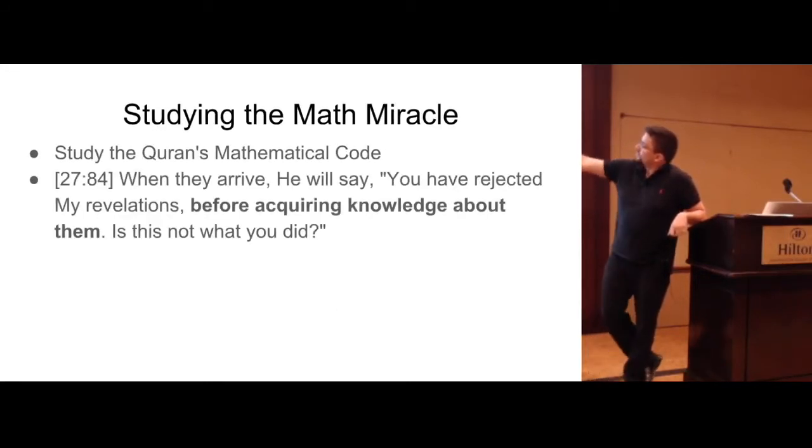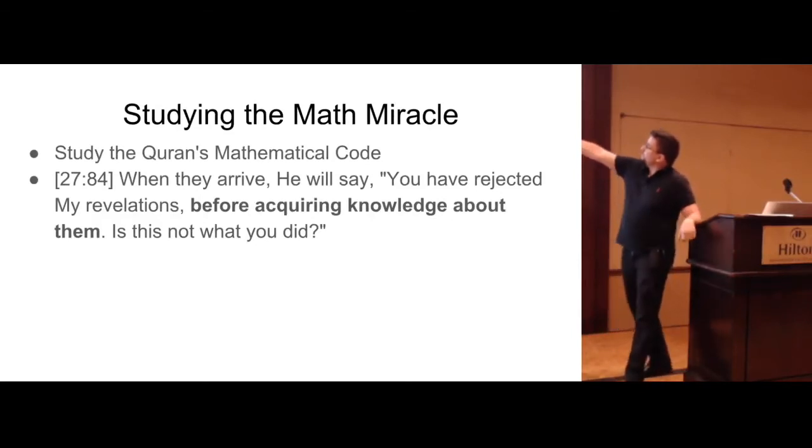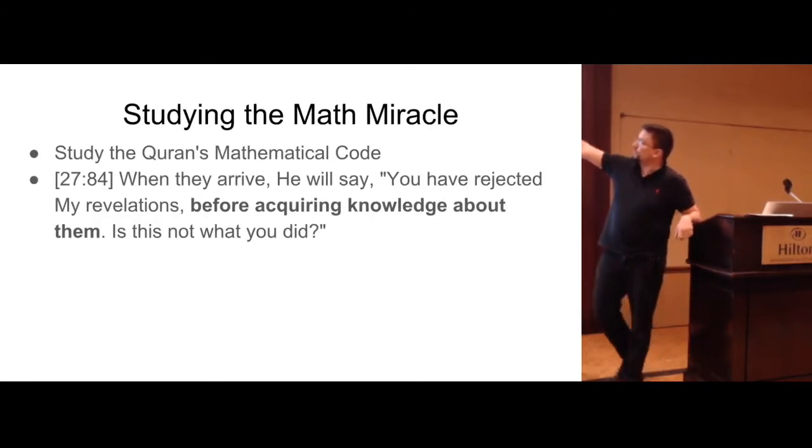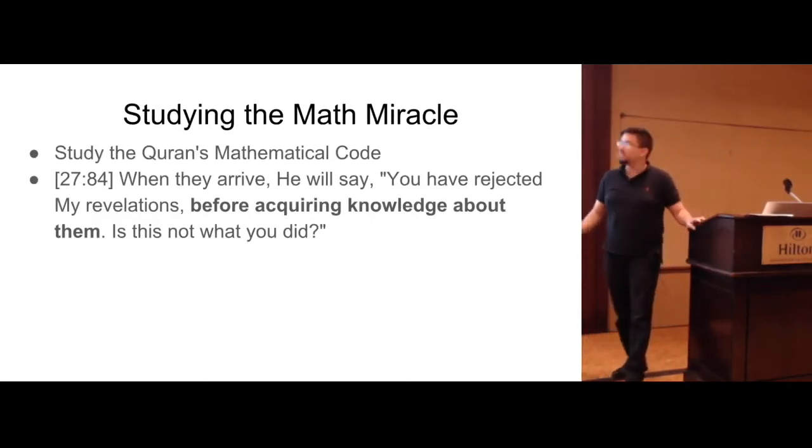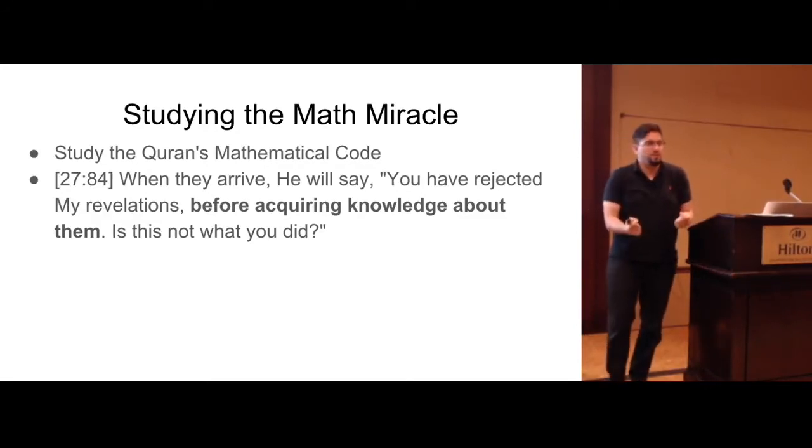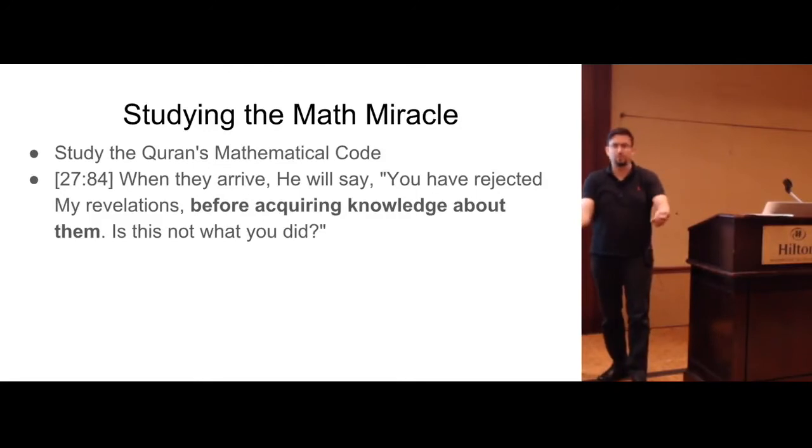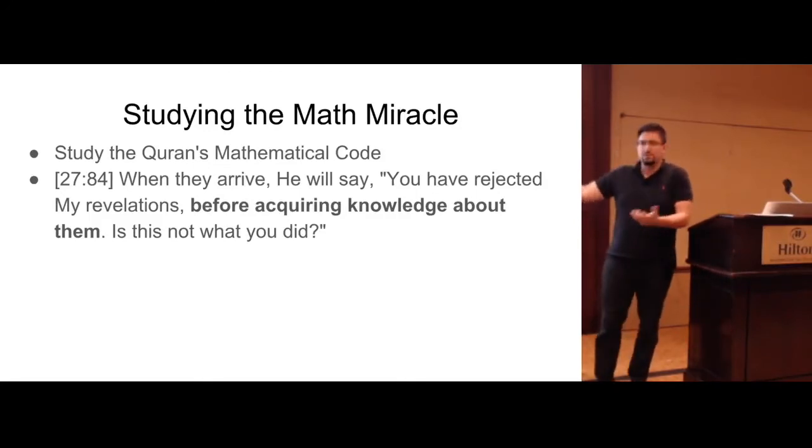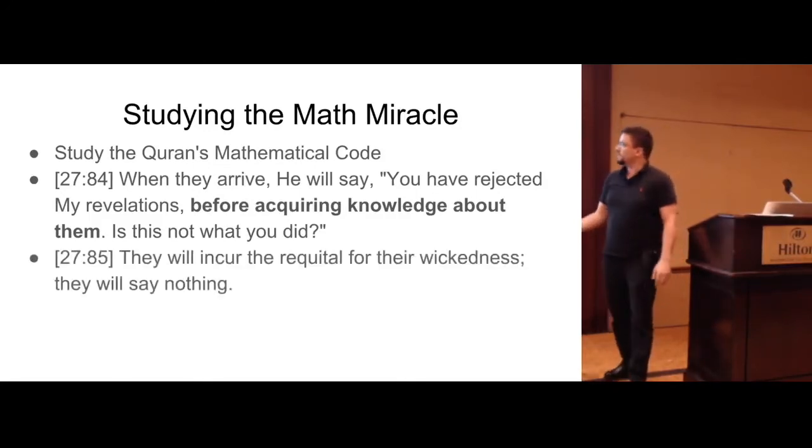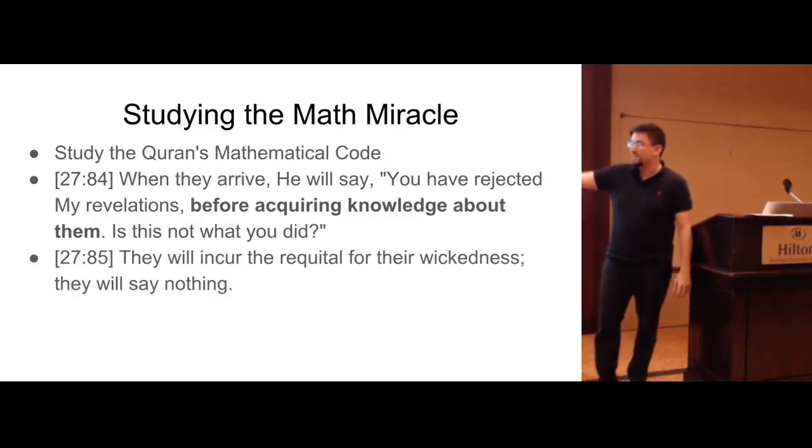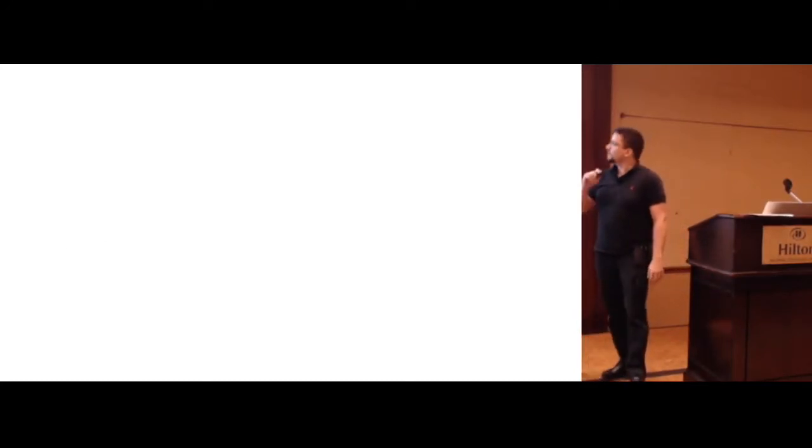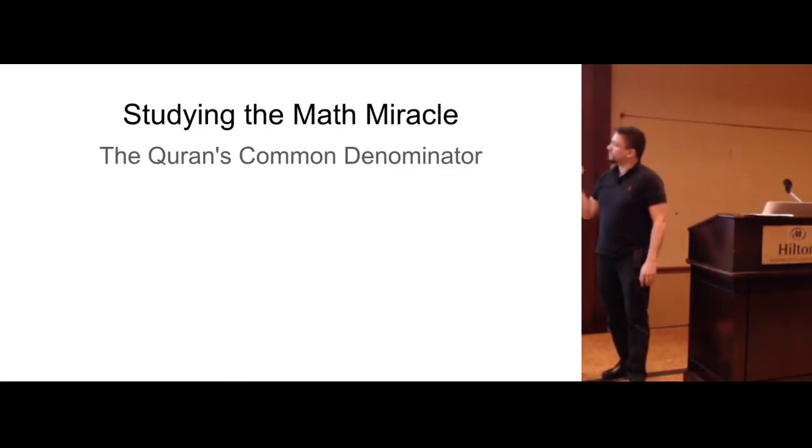So, that's how the math miracle started, with the computer. The creature is the computer. Next, 27:83. The day will come when we summon, from every community, those who did not believe in our proofs, forcibly. Continuing on. Studying the code. When they arrive, he will say, You have rejected my revelations before acquiring knowledge about them. Is this not what you did? This is referring to the math miracle. So, God is saying, you came here, you were diverted from God's path, because you didn't even study. You saw the proofs, you didn't even study them. They will incur the requirer for their wickedness. They will say nothing. Absolutely nothing.